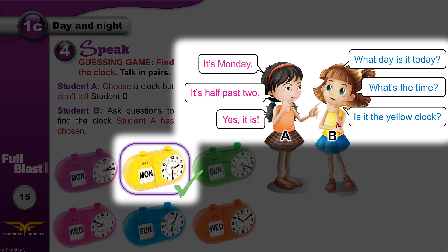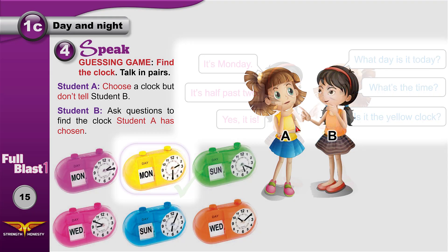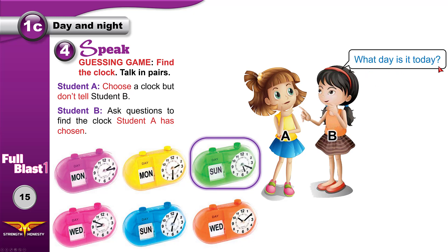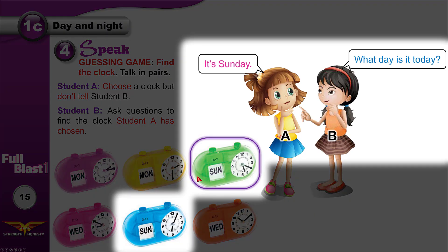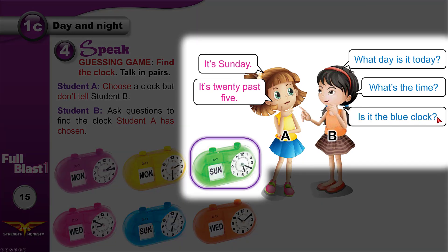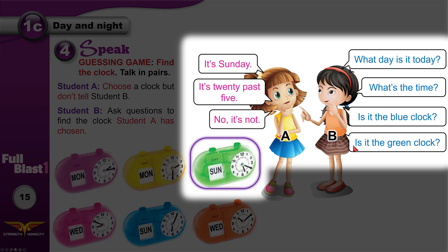Let's try one more time. Student B becomes Student A and Student A becomes Student B. This time, Student A has chosen the green clock. Student B asks: What day is it today? It's Sunday. That means it could be the green clock or the blue clock. What's the time? It's 20 past five. The blue one is five past six. Is it the blue clock? No, it's not. Is it the green clock? Yes, this time you're right. Yes, it is.